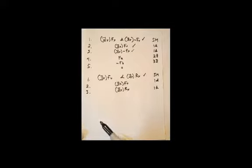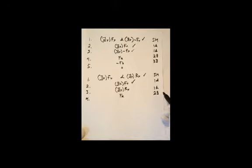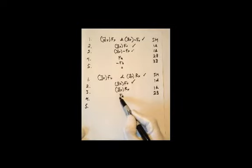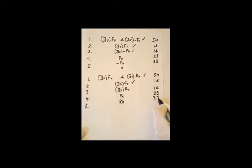When we go to instantiate lines two and three, we have to use different constants. From line two we use 'a' — giving us F(a) by existential decomposition. When instantiating line three, I can't use 'a' again, because I don't want to assume that the person 'a' who is friendly is the same person 'a' who is republican — they may or may not be. So we write down R(b), from line three by existential decomposition.